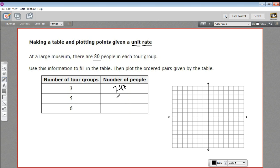Five times eight is 40 with a zero on the end. Six times eight, 48 with another zero on the end. All right. So there's our data. 240 people in three tour groups, et cetera.